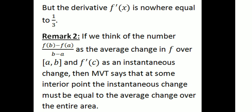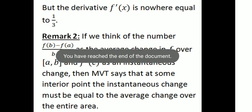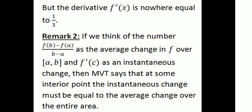Remark 2: If we think of [f(b) − f(a)] / (b − a) as the average change in f over the closed interval [a, b], and f'(c) as the instantaneous change, then the Mean Value Theorem says that at some interior point, the instantaneous change must equal the average change over the interval. This is an important theorem; its properties will be discussed in the next class.